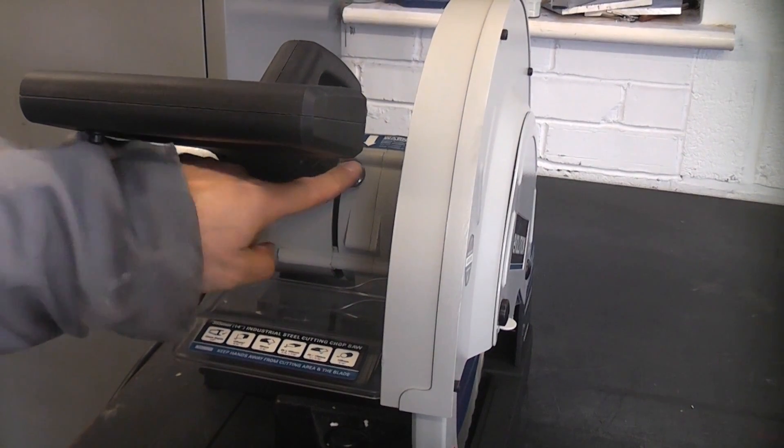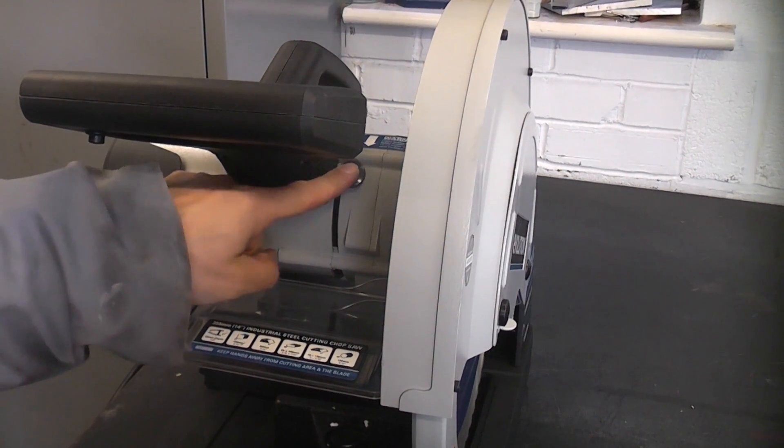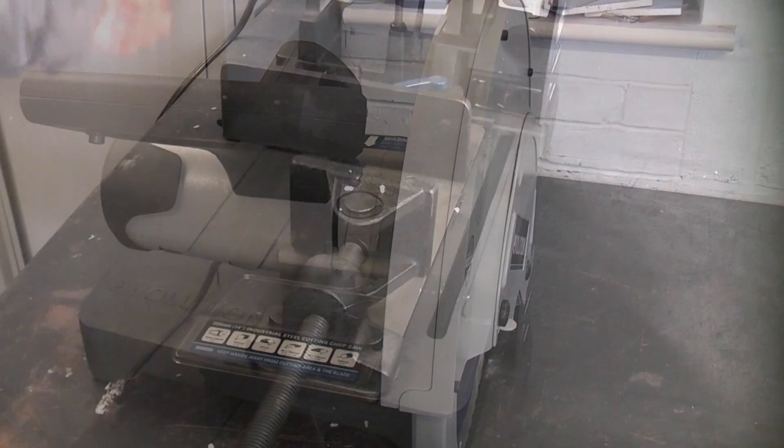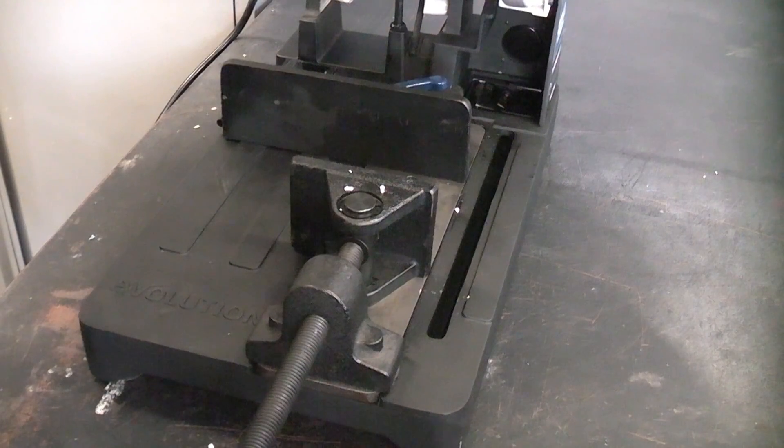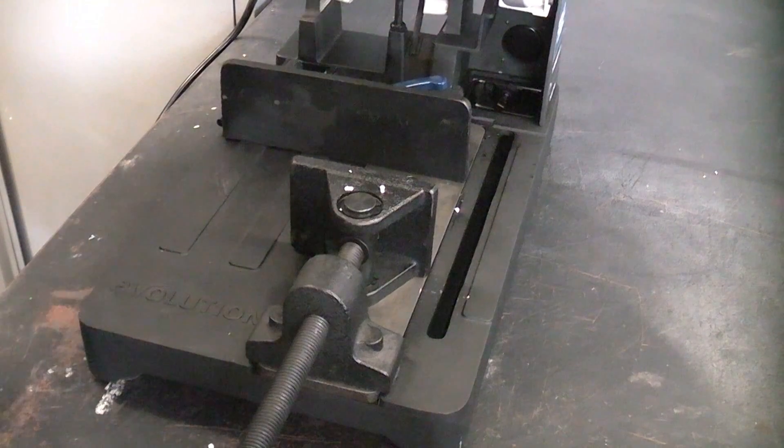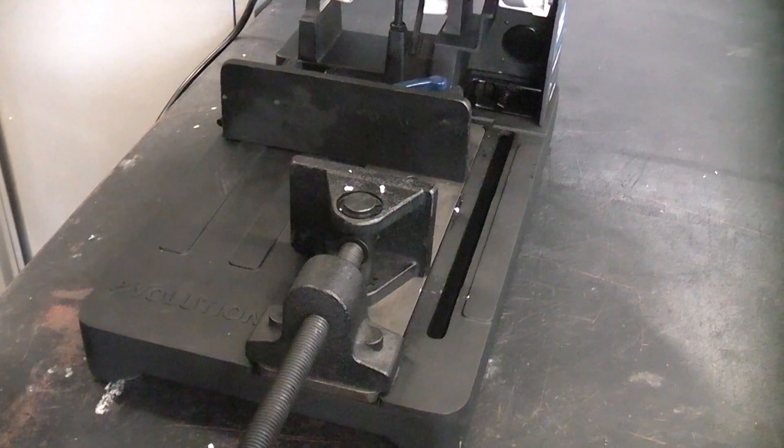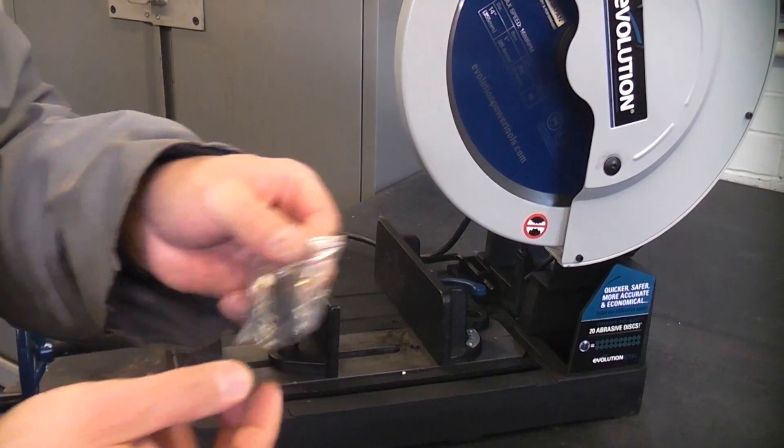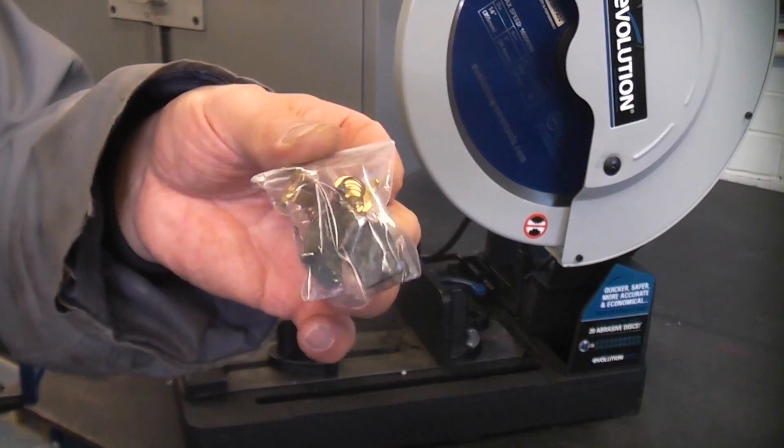And just in there we have the spindle lock which will lock the blade for when you are changing the blade. This machine is actually the 110 volt version but you can also get it in the 230 volt version. And you also get a spare set of brushes with this machine.